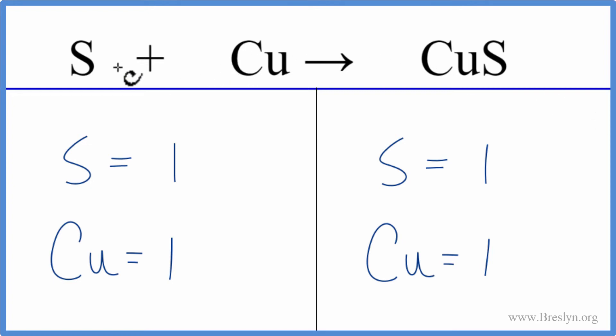If we were asked to report the coefficients, we could say one, one, one, although we don't write them when we write the equation. This is Dr. B with the balanced equation for sulfur plus copper gives us copper 2 sulfide. Thanks for watching.